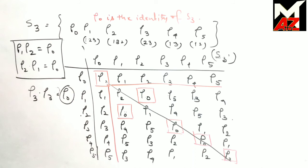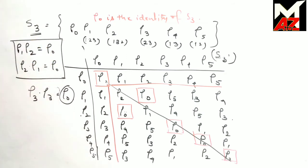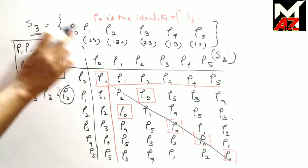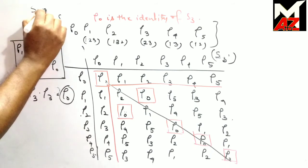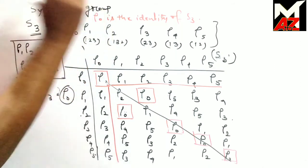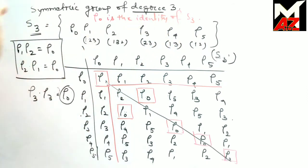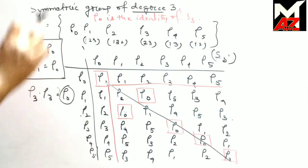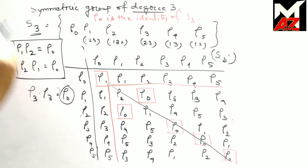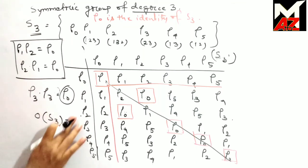This group S3 is called a symmetric group — specifically, the symmetric group of degree 3 (degree, not order). The order of this group is |S3| = 6 = 3!.